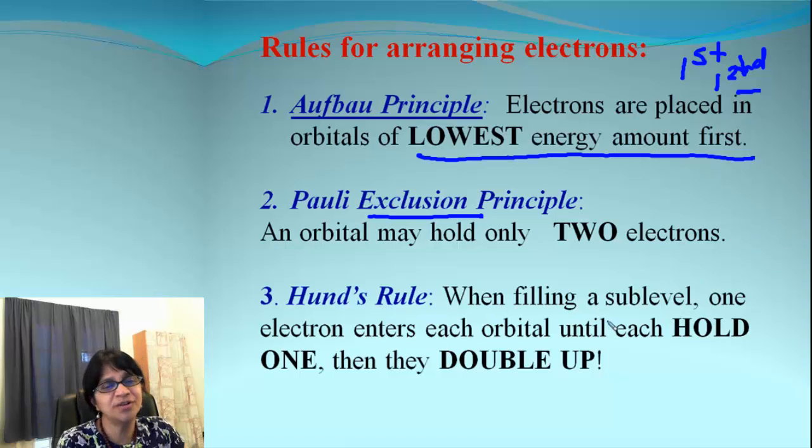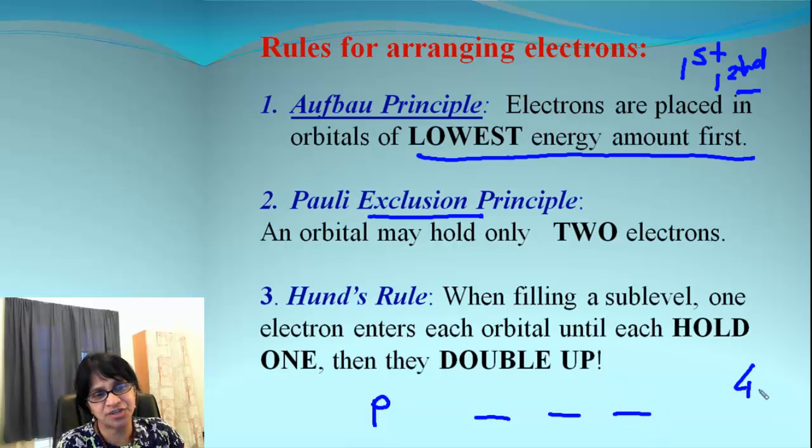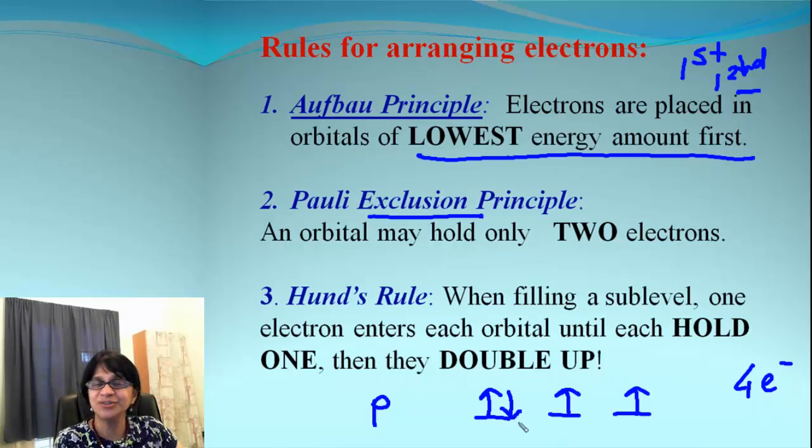Then there is Hund's rule. Hund's rule tells you that whenever we are filling sub-level, you put one electron into each sub-level first and then after that you start matching, start pairing those. So, let's say maybe we have p orbitals. There are three. So, if I show with these simple lines, those are three sub-shells orbitals for p. And we have suppose four electrons which are coming in. The number one, first electron goes into the first orbital or I call it room. Then second one goes into next room. Third one goes into the third room. And we will start pairing only after all those rooms are half filled. So, fourth electron will go into the first room.